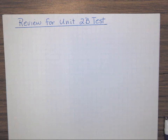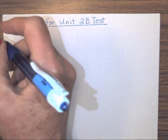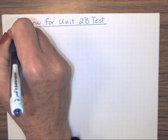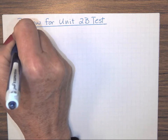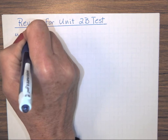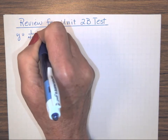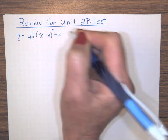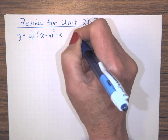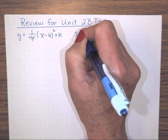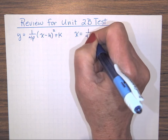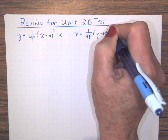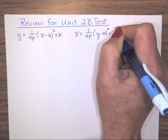For our unit 2B test, remember at the very first we started with parabolas that had this form: Y equals 1 over 4P times (X minus H) squared plus K. Those were the ones that opened up and down. If they opened left and right, we had X equals 1 over 4P times (Y minus K) squared plus H.